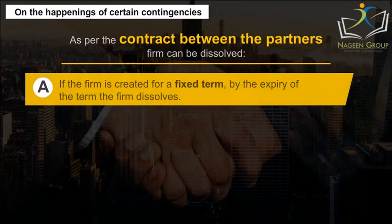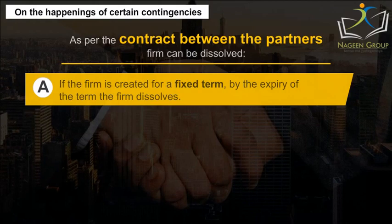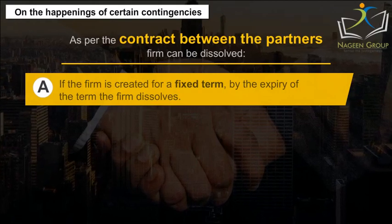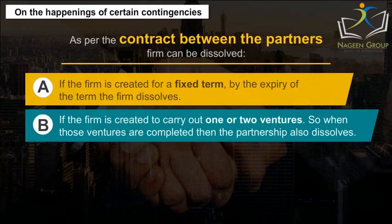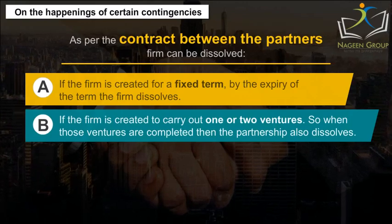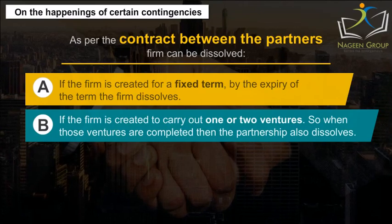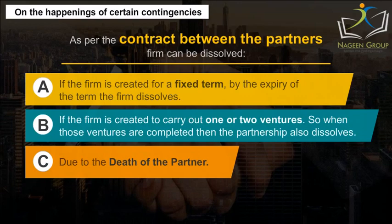If the firm is created for a fixed term, by the expiry of the term the firm dissolves. If the firm is created to carry out one or more ventures, when those ventures are completed then the partnership also dissolves. Due to the death of a partner, or by the formal judgment of a partner as an insolvent, the firm may also dissolve.